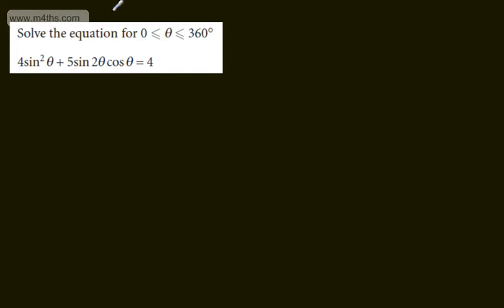In this video we're going to do an extension question on trig equations. We're asked to solve the equation for theta between 0 and 360 degrees. We've got 4 sine squared theta plus 5 sine 2 theta cos theta is equal to 4.